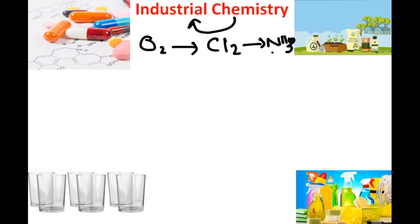We also have ammonia, which is used for the manufacturing of fertilizers. These different chemicals are manufactured in industry and used in different fields for having good crop production. So the chemistry in which we study the manufacturing of different products in industry is called industrial chemistry.